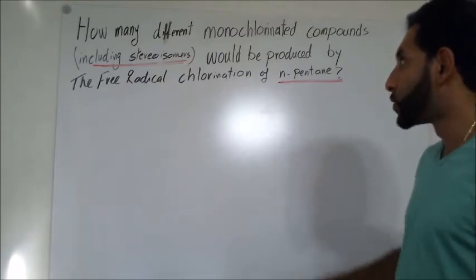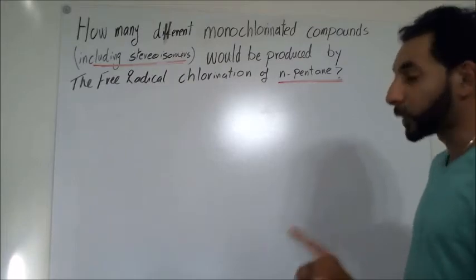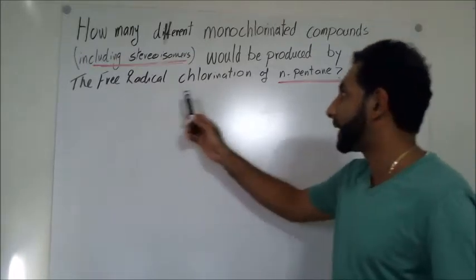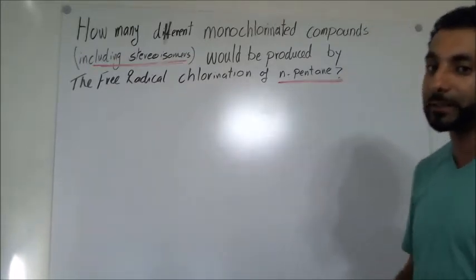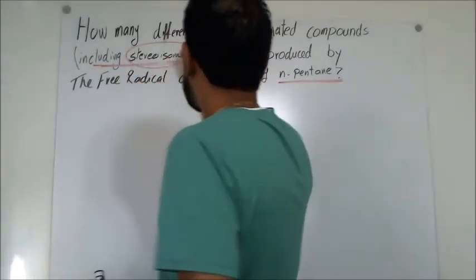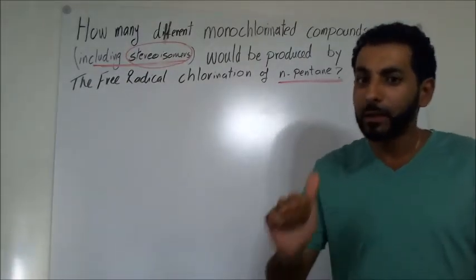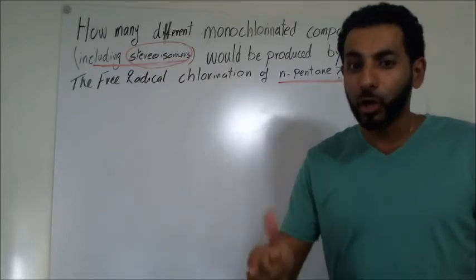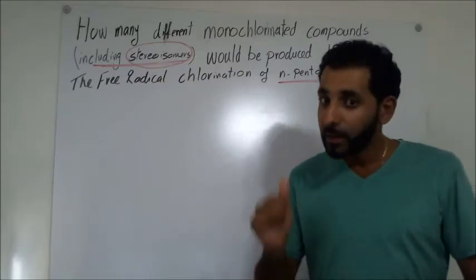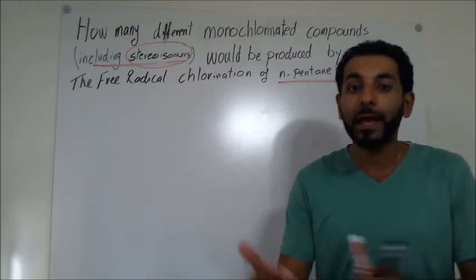Let's look at a question and apply this concept. How many different monochlorinated compounds, including stereoisomers, would be produced by the free radical chlorination of n-pentane? Let's first discuss what stereoisomers are. Stereoisomers are different compounds that have the same molecular formula and the same connectivity, but a different orientation of their atoms in space.